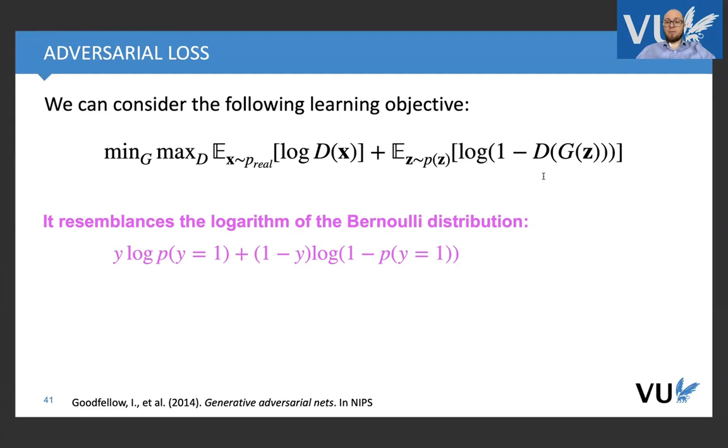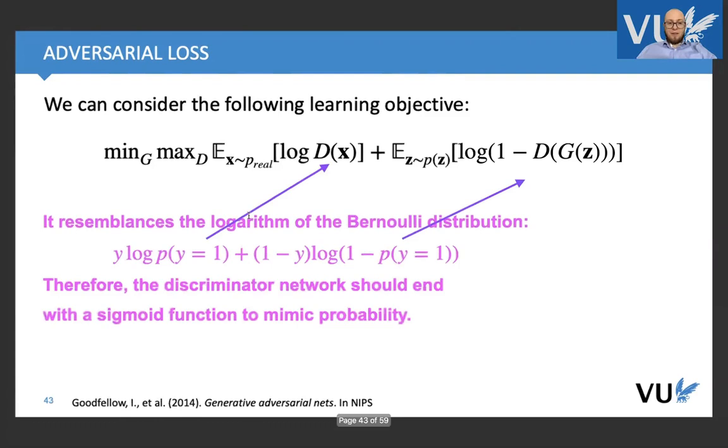We have that this probability of ones is log of distribution. So D of X models distribution, probability of X being real, or we have fake. Then we have log one minus probability of being real. One minus probability of being real defines the probability of fake. So we see that these probabilities are here. Now we want more. We include these expected values here and here. And we include this generator, because generator generates fake images.